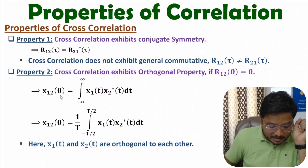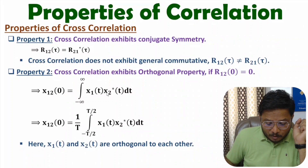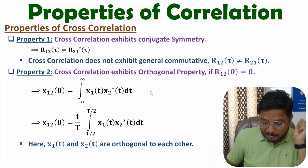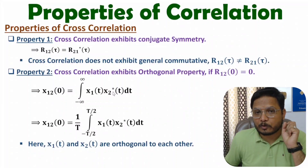The basic definition of cross correlation is written with respect to an energy signal. As per the definition, R₁₂(0) is the integration from minus infinity to plus infinity of X₁(t) into X₂*(t) dt — here we have τ minus τ, but τ is zero. So if this integration equals zero, one can say X₁ and X₂ are orthogonal signals to each other.